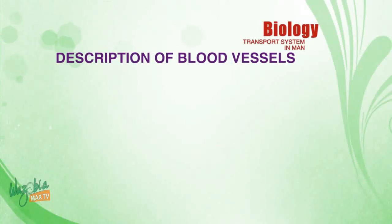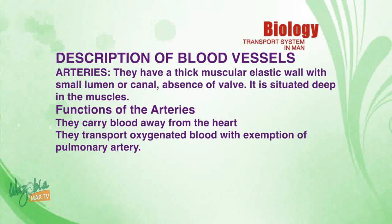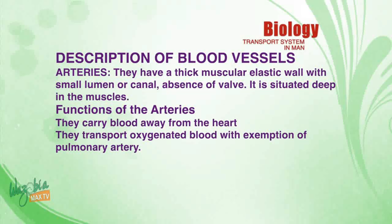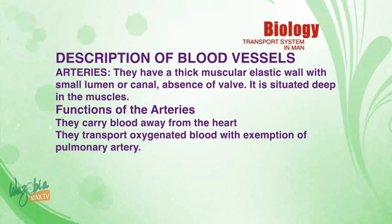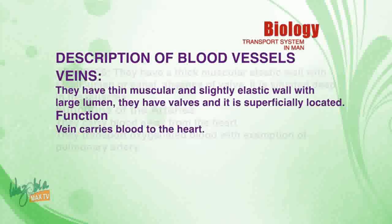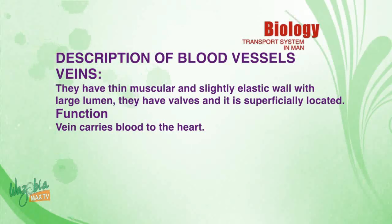Description of blood vessels — arteries: arteries have a thick, muscular, elastic wall with a small lumen or canal, absence of valves, and are situated deep in the muscles. Functions of arteries: they carry blood away from the heart and transport oxygenated blood, with the exception of the pulmonary artery.